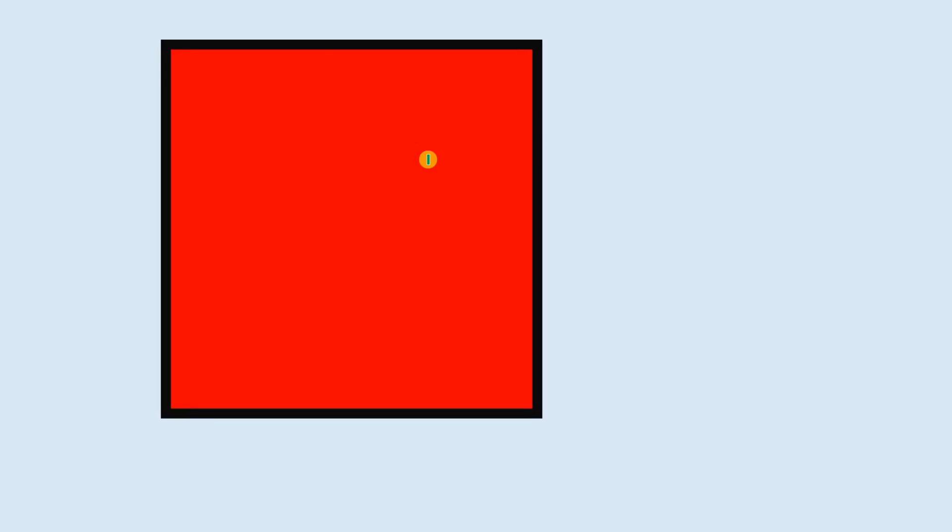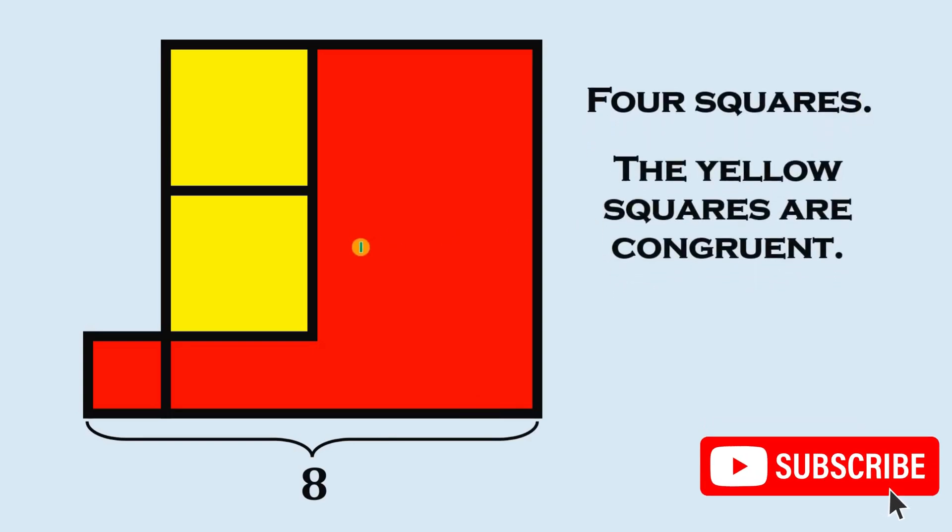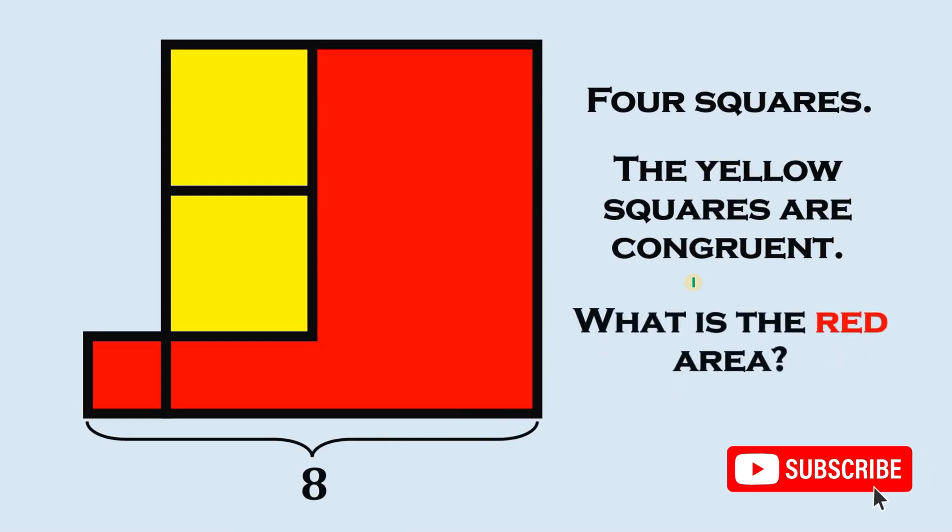Let's begin with the square and let's draw two congruent yellow squares and a red square in this part. Now the length of this side is eight units. Given four squares, the yellow squares are congruent. Now the question is what is the area of the red shaded region?